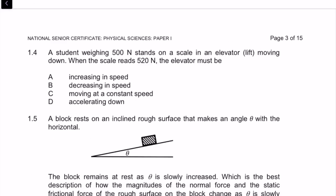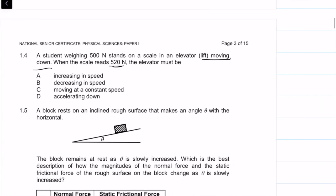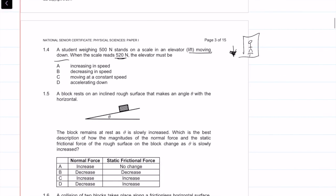Question 1.4: a student weighing 500 newtons stands on a scale in an elevator moving downwards. When the scale reads 520 newtons, the elevator must be — is it increasing in speed, decreasing in speed, or moving at constant speed? Let's see what the free body diagram for this looks like.